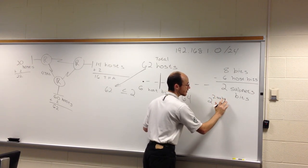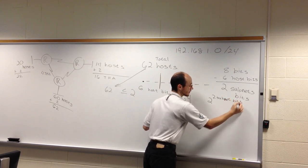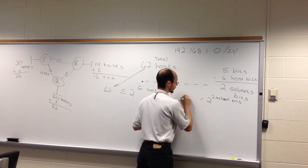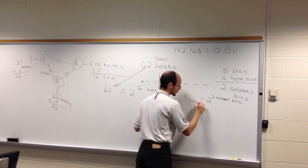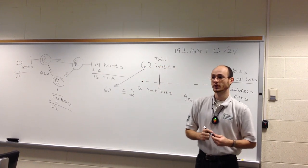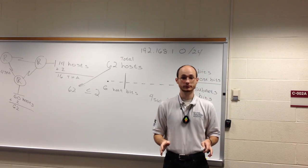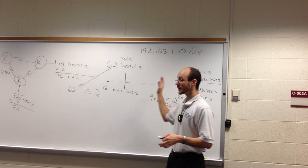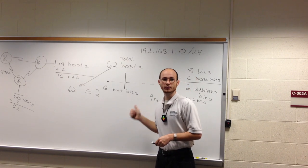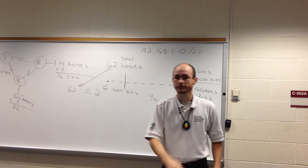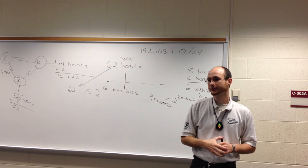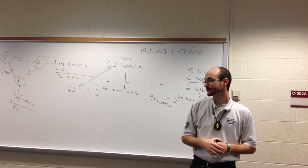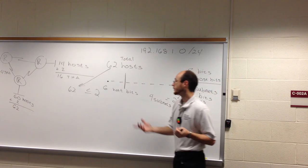Anytime you have something in bits and want to find a number, take that and make it the power of two. With two subnet bits I get four subnets. But I said I had six networks — three LANs and three WANs. If I make each network 64 addresses wide, I can only address four, which is not enough.